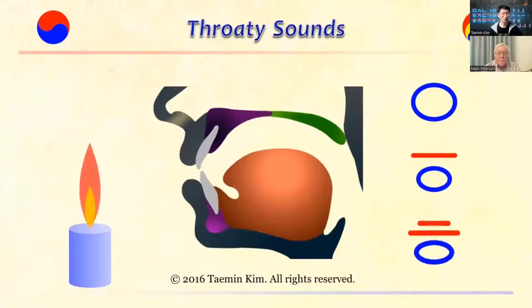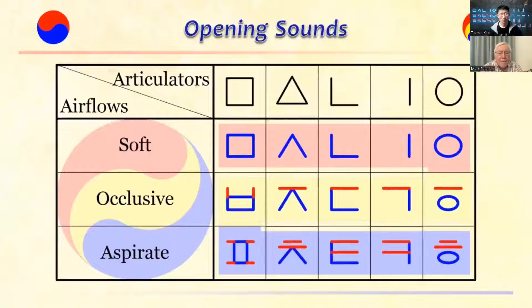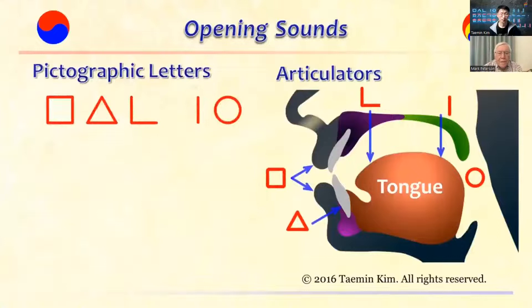We will practice the 15 opening sounds column-wise in the table. Let's also practice the opening sounds row-wise to cross-check their articulations. The softer sounds in the first row are M, S, N, NG, and the vowel initiator. The stopping sounds in the second row are B, J, D, G. The candle-blowing sounds in the third row are P, CH, T, K, H. In the mouth, 5 opening articulators with 3 different air flows produce 15 opening sounds in a 3-by-5 matrix.